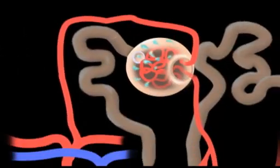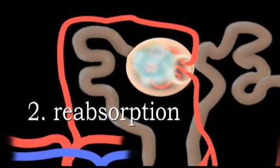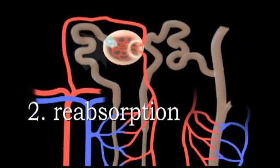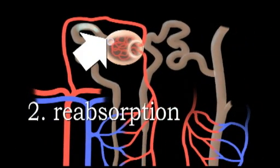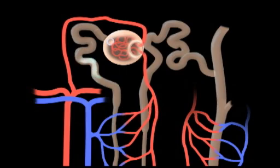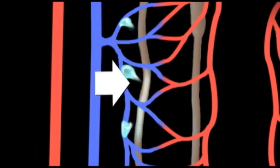During the next step of filtration, called reabsorption, the filtrate passes from Bowman's capsule into the renal tubule. Here, 99% of the filtrate is reabsorbed back into the capillaries surrounding the tubule and returned to the bloodstream.